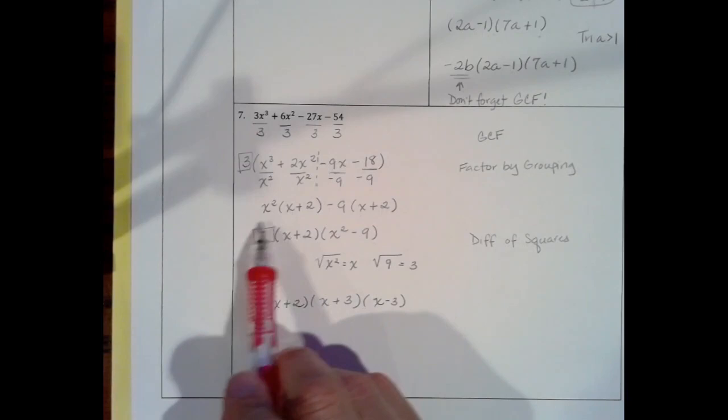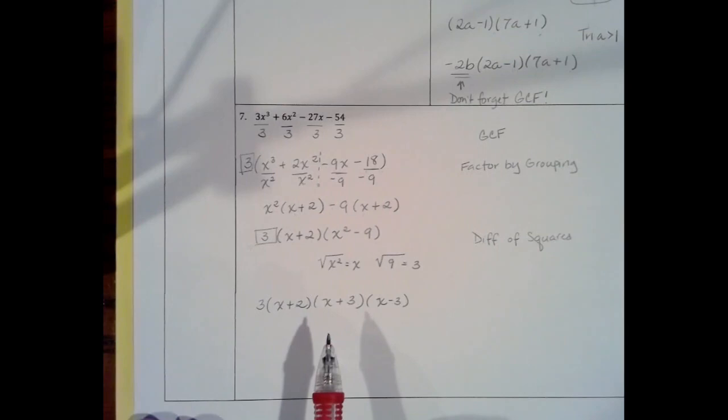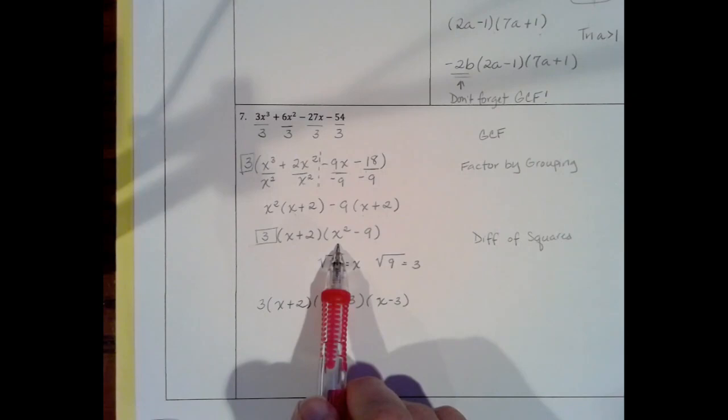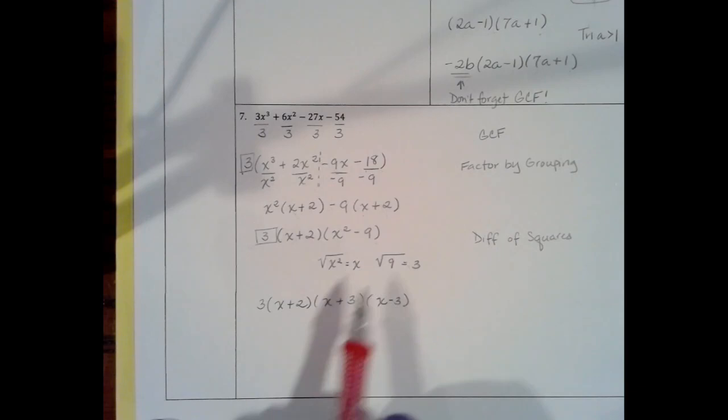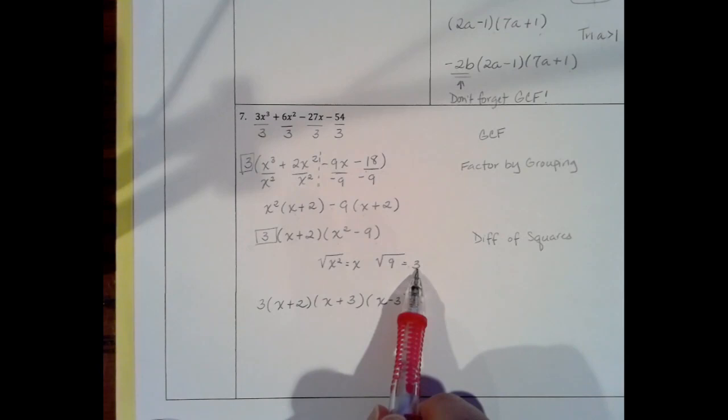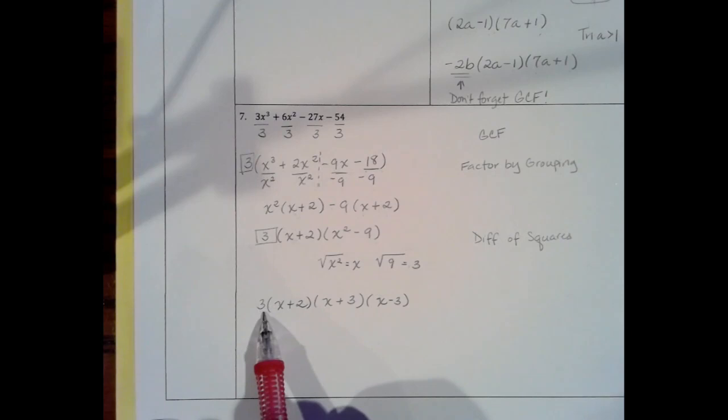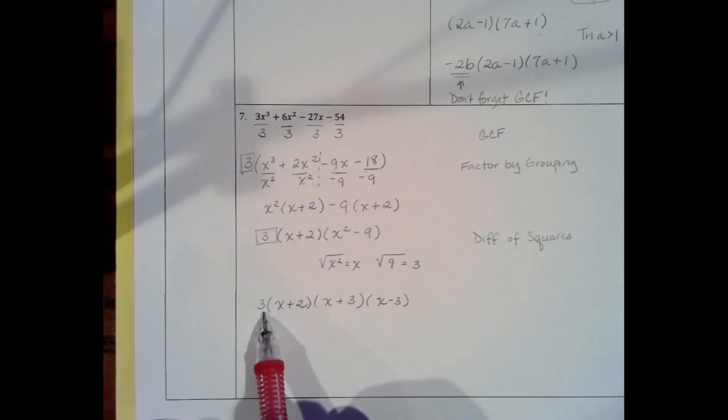Remember your GCF. But are we really done? We have x² minus 9: two terms, a minus sign between them, and both are perfect squares — so it's a difference of squares. The square root of x² is x and the square root of 9 is 3. So my final answer is 3 times x plus 2 times x plus 3 times x minus 3.